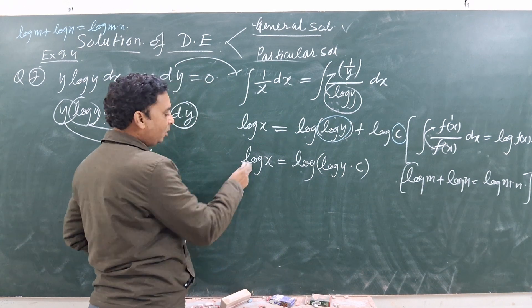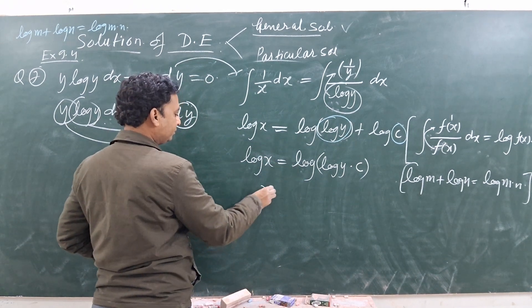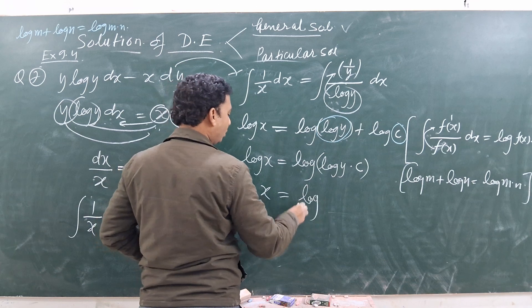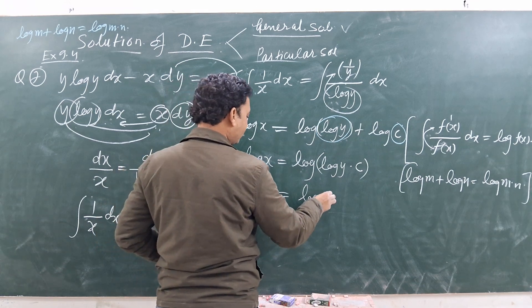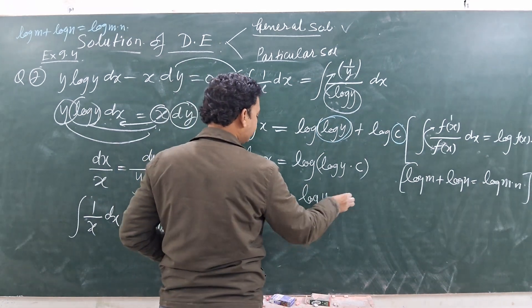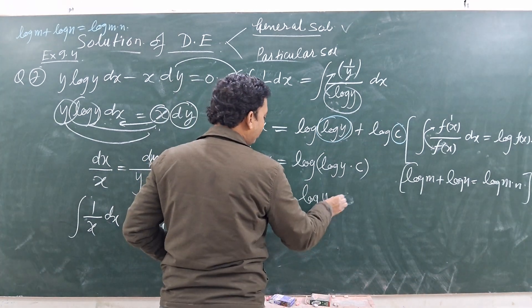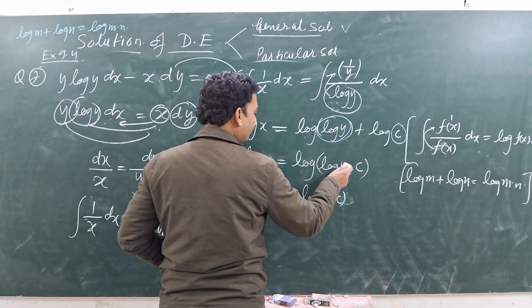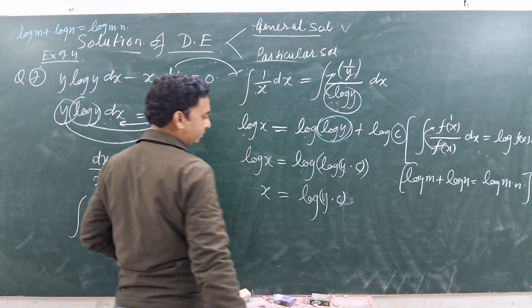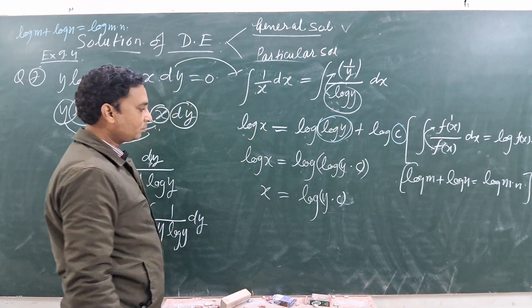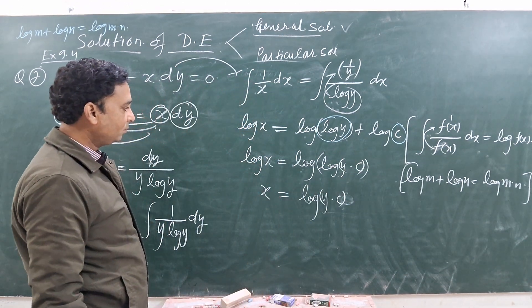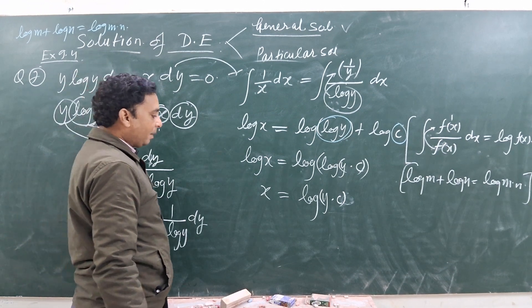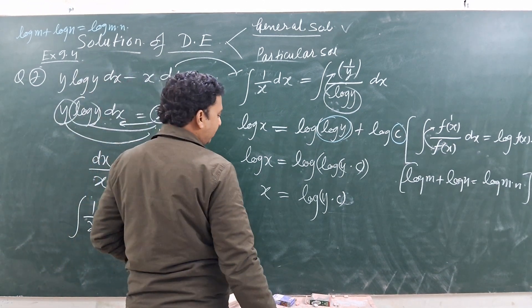The log on both sides cancels out. So we get x · C = log Y. The entire expression on the right is log Y into C together as one combined term.